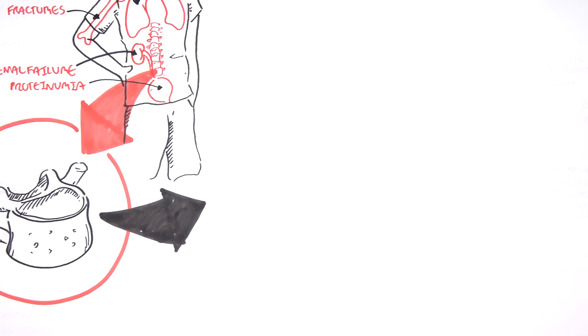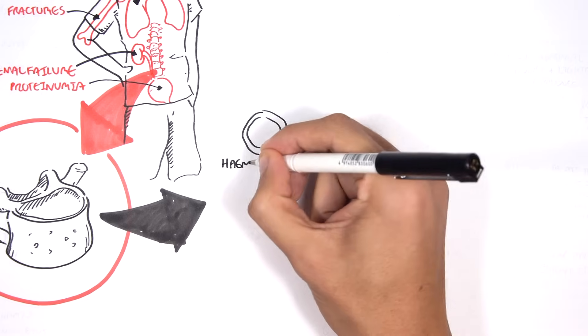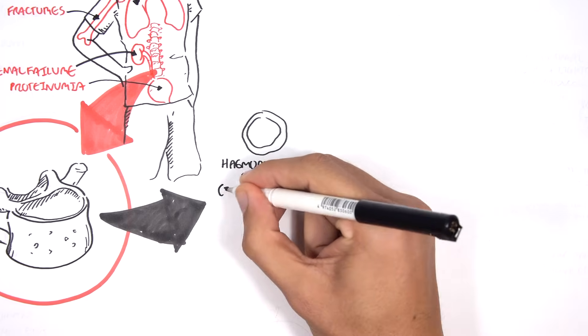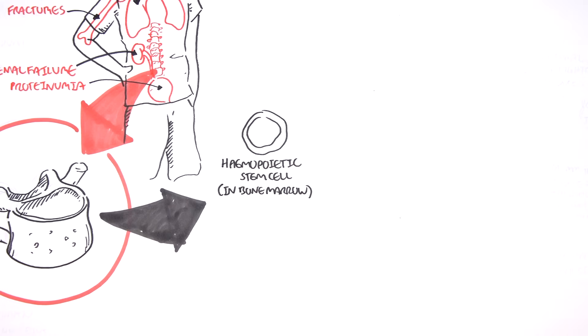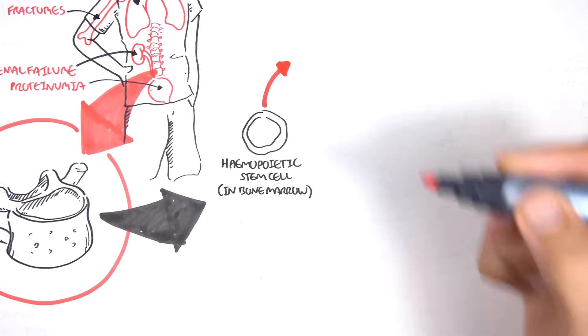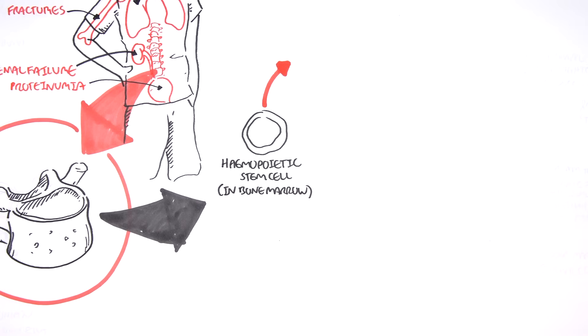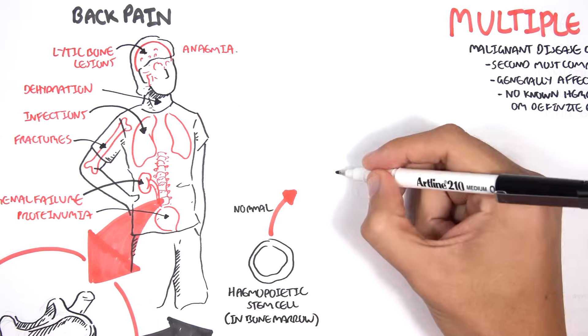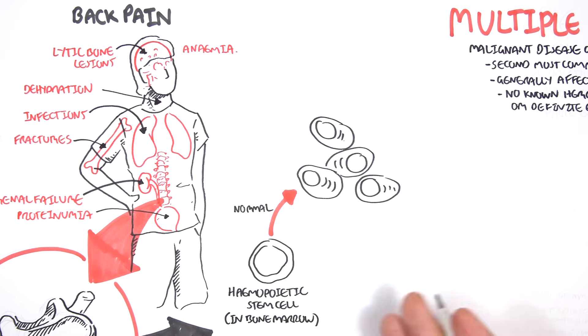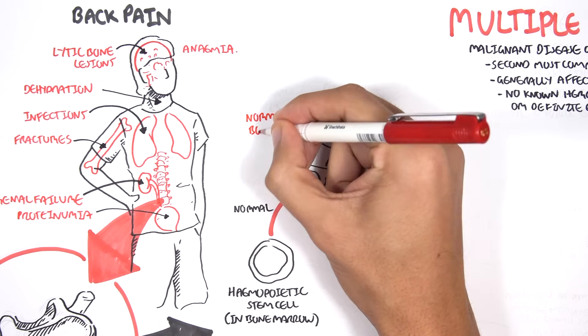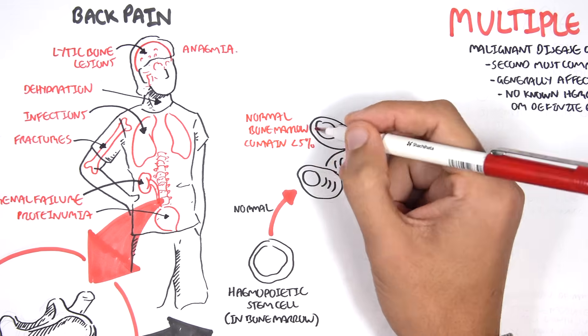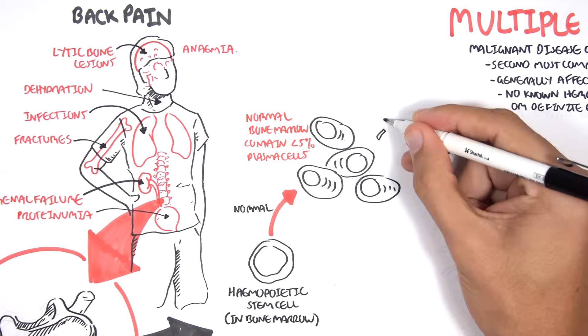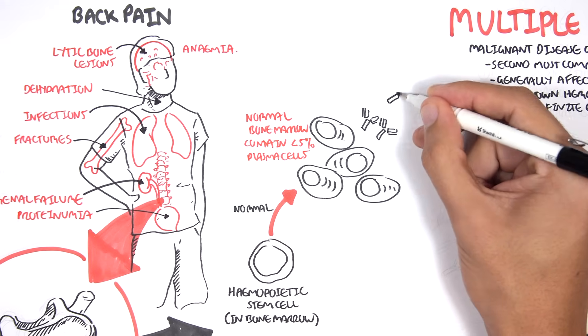If we were to zoom into the bone marrow, here we have a hemopoietic stem cell within the bone marrow. Normally the hemopoietic stem cell will eventually make B cells and then plasma cells, where the plasma cells will eventually reside in the bone marrow. Normally the bone marrow contains less than 5% plasma cells, which are the long lived plasma cells.